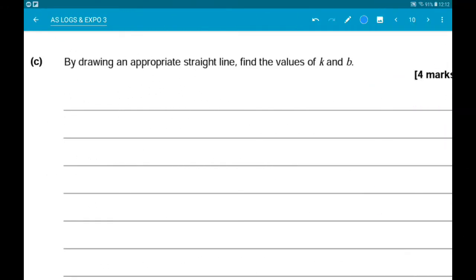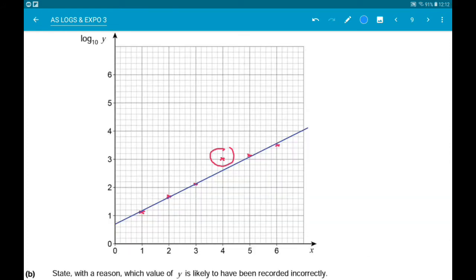Okay then, part C. By drawing an appropriate straight line, find the values of b and k. Okay, so the appropriate straight line is a line of best fit with the data, although ignoring the one we talked about in part B. So mine looks like that.